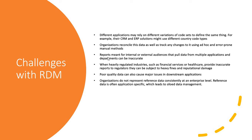Reports for internal and external audiences that pull data from multiple applications and departments can be inaccurate. For example, one system may say the UK country code is GB, another says UK, and a third says GBR. You need to be aware of all those different variations across different systems, otherwise your reports will give false results.